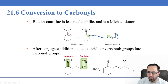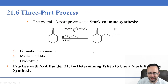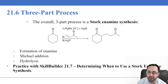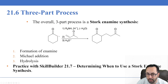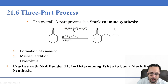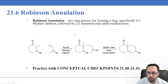This is the Stork enamine synthesis — a modified Michael addition. Putting it all together: we treat with a dialkyl amine to produce an enamine, which acts as the Michael donor and performs a nucleophilic attack on the beta carbon of the Michael acceptor (identified by its conjugated pi bonds with the carbonyl). Finally, we treat with acid to convert the enamine back to a ketone, giving our Michael addition product.